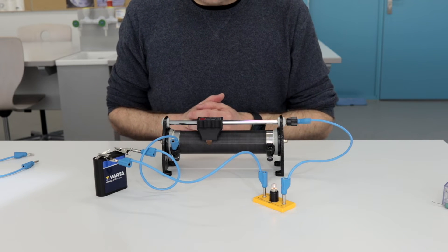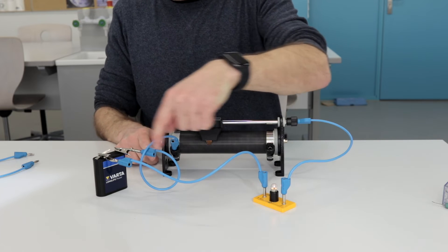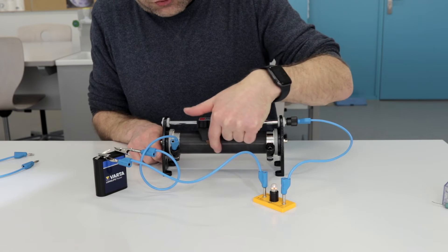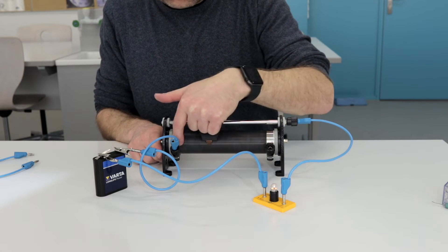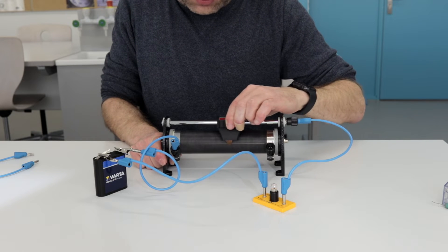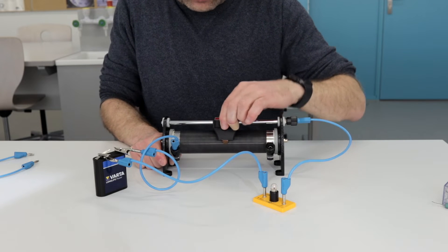And you see that the light bulb lights up. The current flows through the variable resistor through this section of the coil. I can adjust the section of the coil that is part of the circuit by moving the wiper.